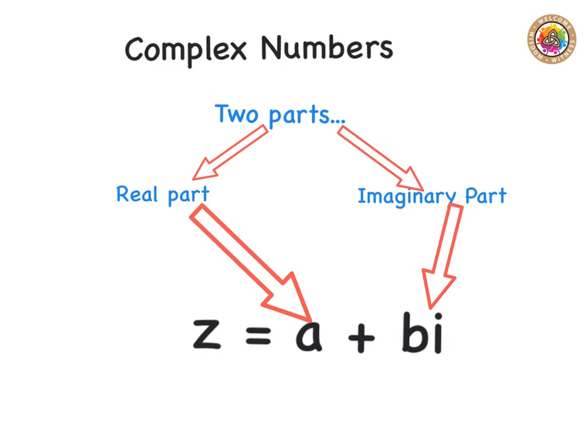If we have something and we're told z equals 4i, it doesn't mean that there's no real part, it just means that the real part is equal to zero. Likewise, if we're told that z is equal to four and is a complex number, it doesn't mean that there's no imaginary part, but that the imaginary part is equal to zero.